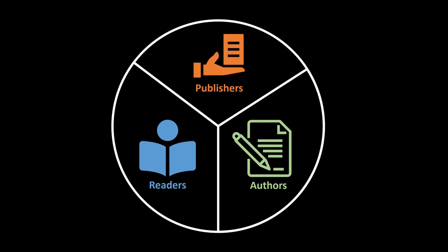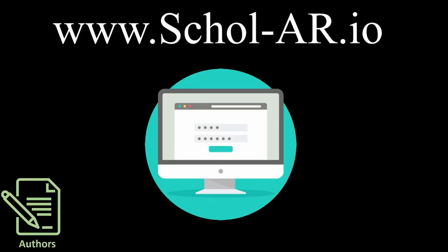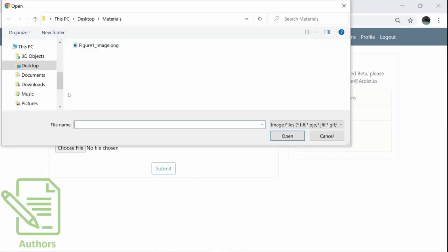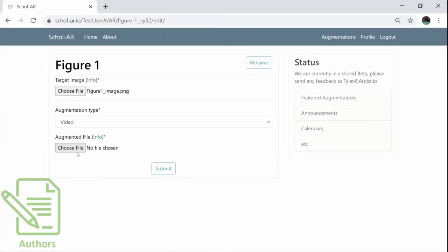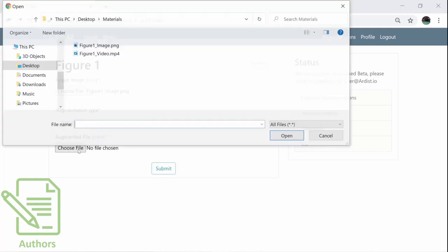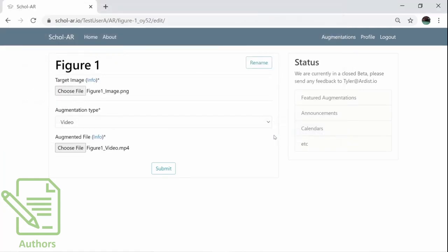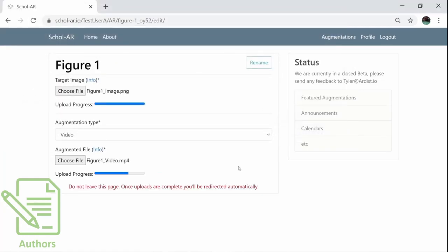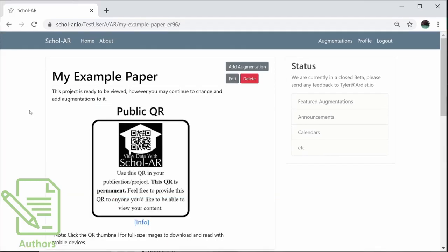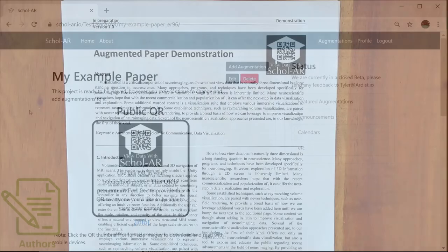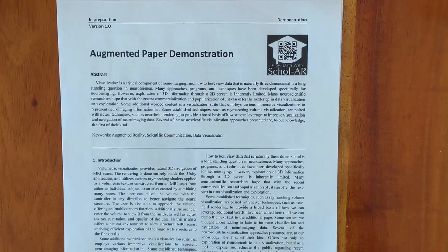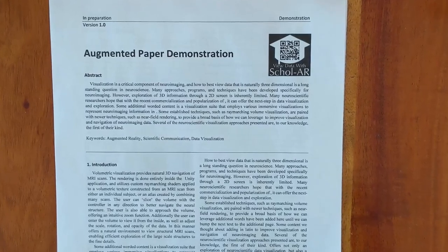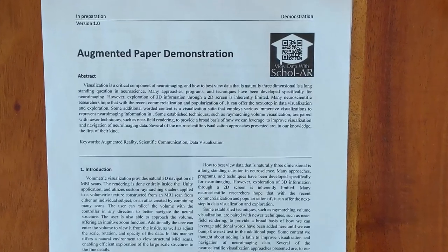Authors can use Scholar to easily augment their data into documents at Scholar.io by simply uploading any figures they would like augmented and the data that should be augmented on top of them. Afterwards, they automatically receive a QR code. Once this code is included in their document, all augmentations immediately function. This entire process does not require any technical skills and can be completed in minutes.